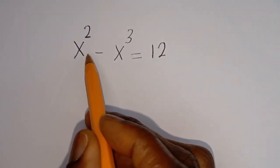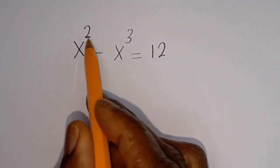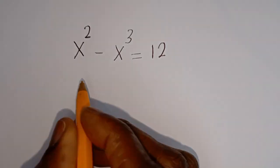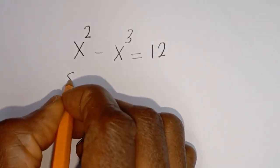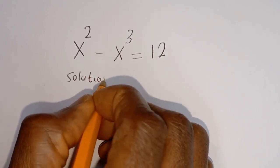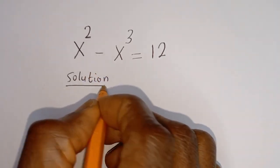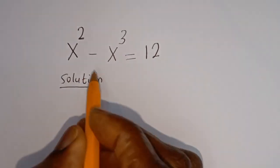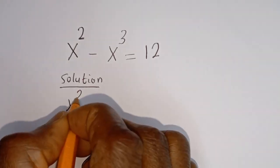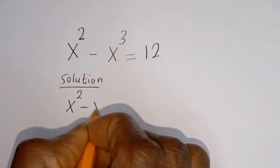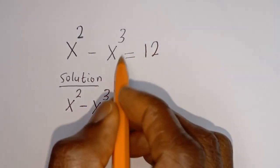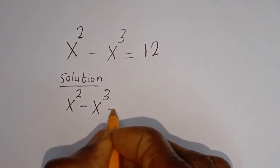Hello. How to solve for s in this equation: s squared minus s to the power of 3 is equal to 12. Solution. Here we have s squared minus s to the power of 3. If we take this 12 to this side, it becomes minus 12.